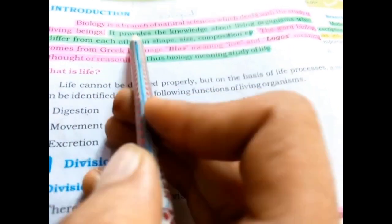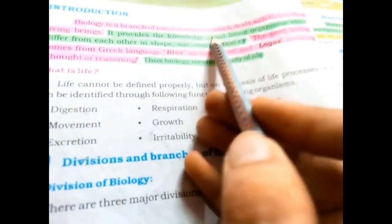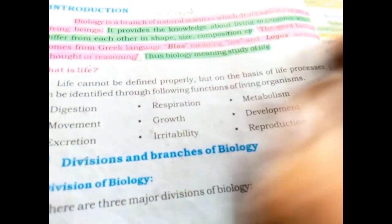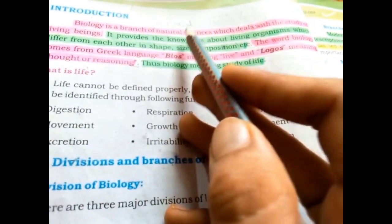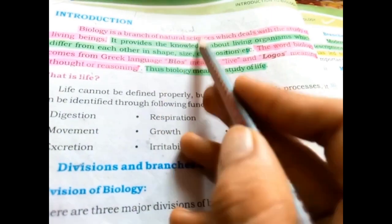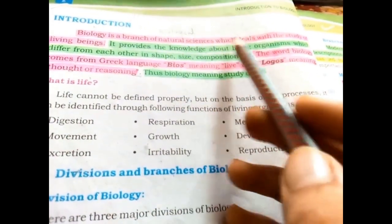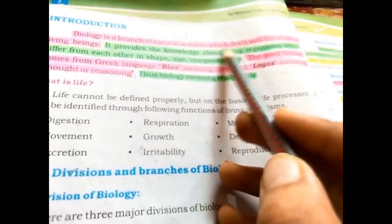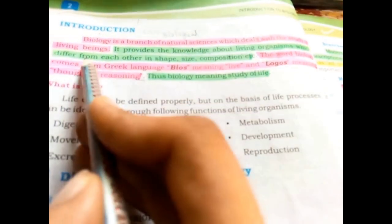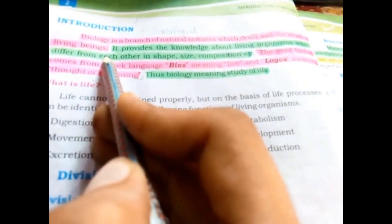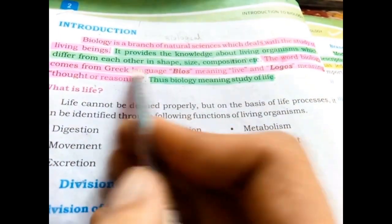Biology is a branch of natural science, also called biological science. It deals with the study of living organisms, including their shape, size, composition, and the structure of their body.